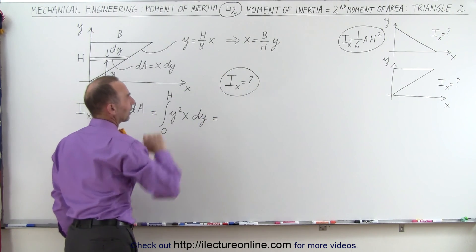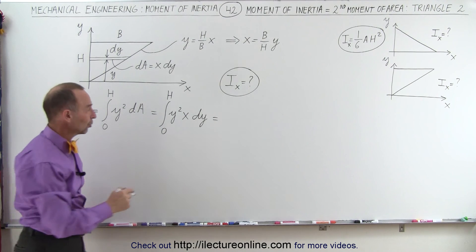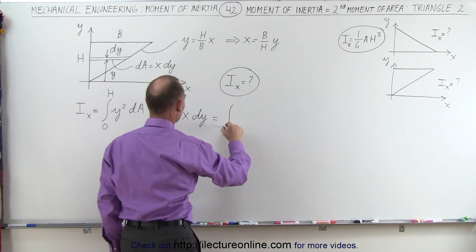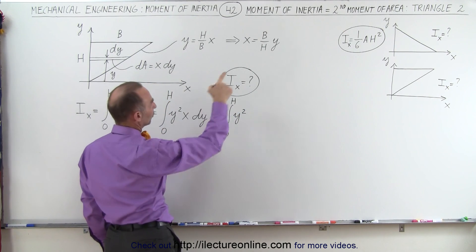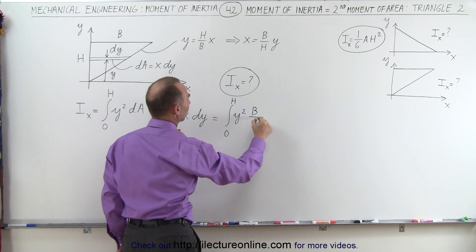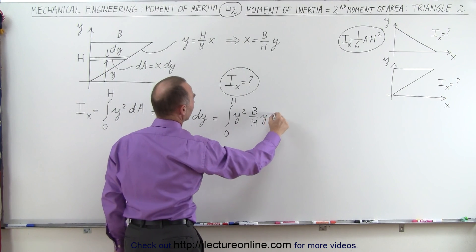This is equal to the integral from 0 to h of y squared. Instead of x, we're going to write b over h times y times dy.